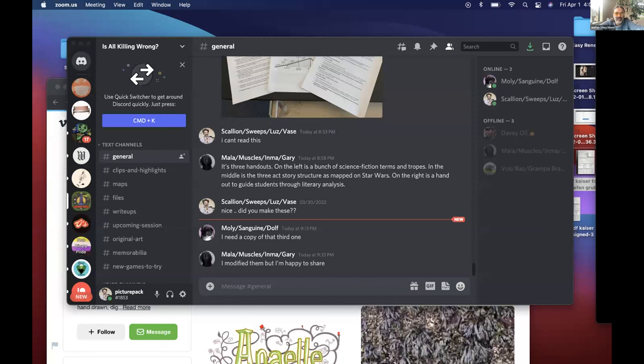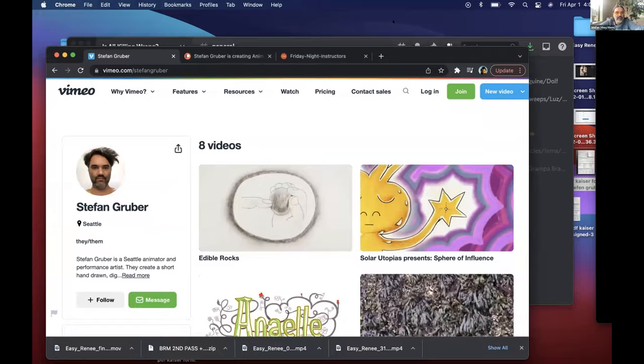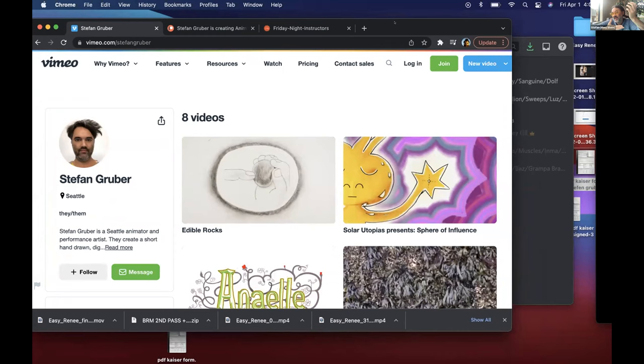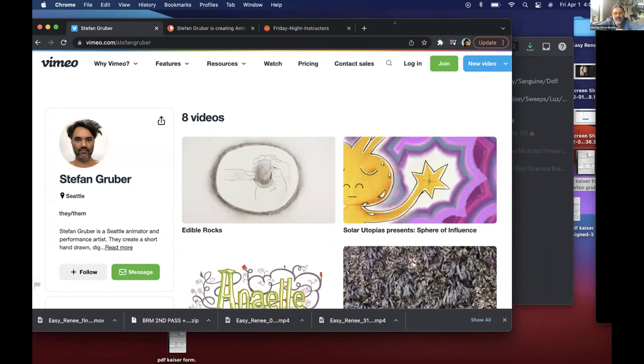I would like to share an animation piece with you all this evening. I'm going to share screen and make sure I share sound. So I'm showing you my Vimeo page. I'm just starting to take these films I've felt precious about and only wanted to share in live settings and put them online. In the tradition of a menu, I have three pieces I would recommend tonight. Edible Rocks is about the time I tricked my little brother into believing there are some rocks you can eat.